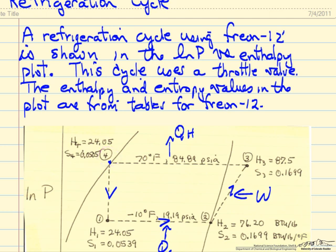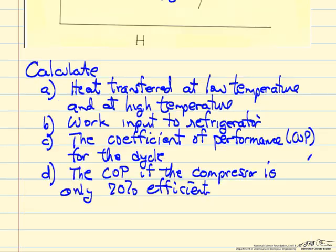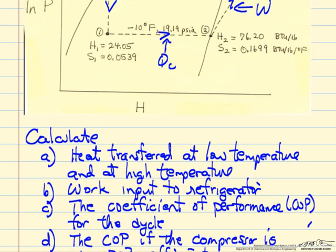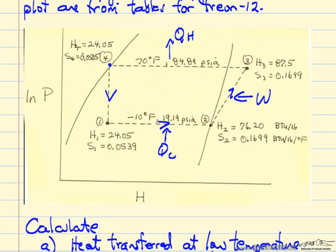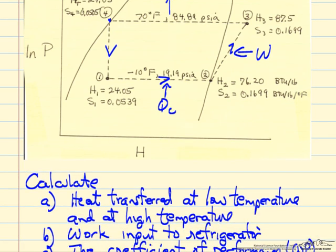At the data points, the enthalpies in BTUs per pound and the entropies in BTUs per pound per degree Fahrenheit are given from a table. The objective is to calculate the heat transferred at low temperature and at high temperature, QC and QH.